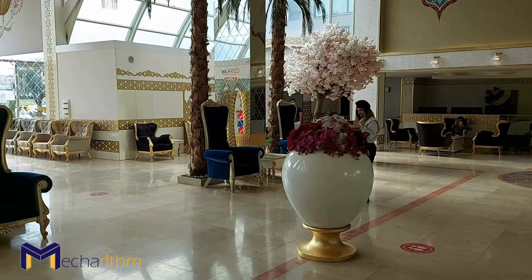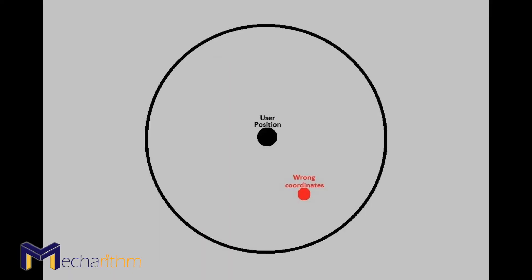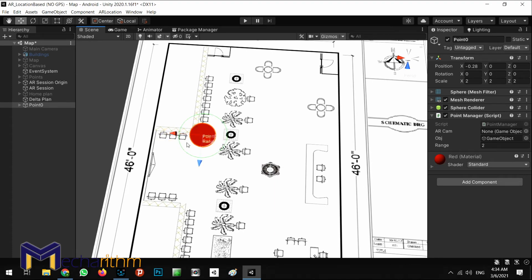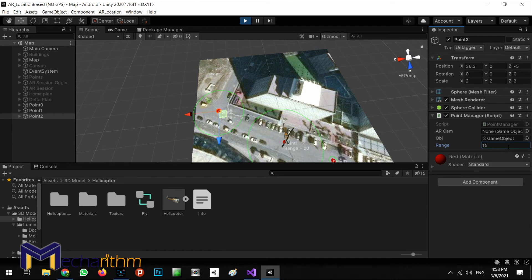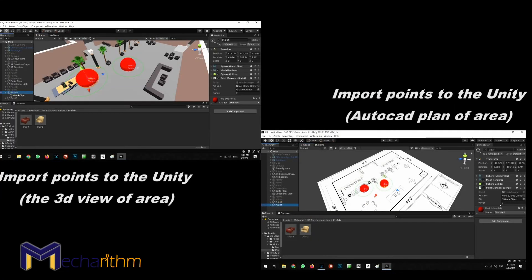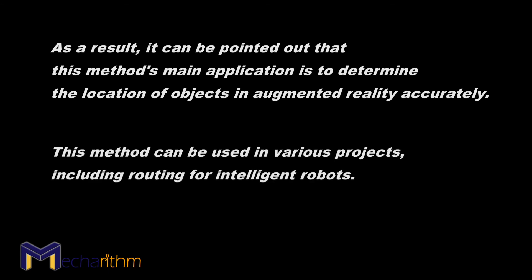This method can be used for projects where the user intends to move in a closed space and it is not possible to use GPS, or where the low accuracy of GPS can disrupt the application. In this method you can use AutoCAD maps of a place, a 3D model of the area, a map, satellite image, or in the most accurate case individual sampling to determine the location of objects. As a result, this method's main application is to accurately determine the location of objects in augmented reality, and it can be used in various projects including routing for intelligent robots.